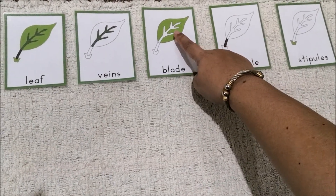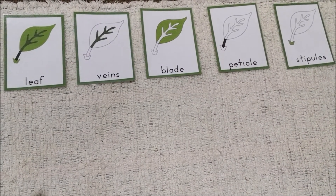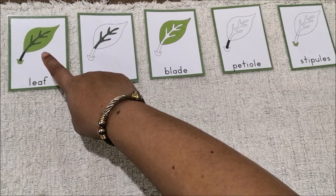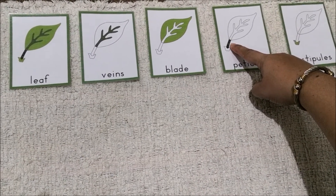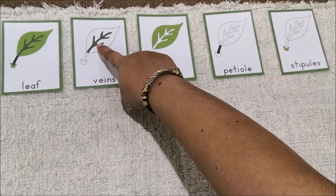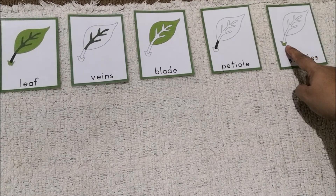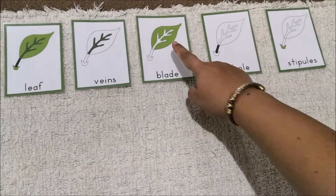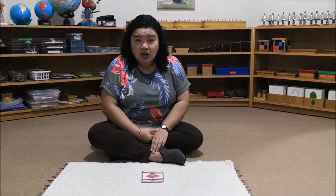Blade. Now this time, tell me its name. What is this? Leaf. What is this? Petiole. What is this? Veins. What is this? Stipules. What is this? Blade.